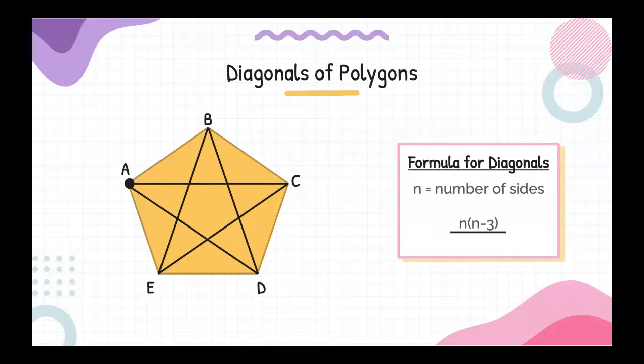But wait, because every time we have one of those diagonals, A, C, and C, A, they're the exact same diagonal, we need to divide that by two. So our total formula for diagonals is N times the quantity N minus three all over two.